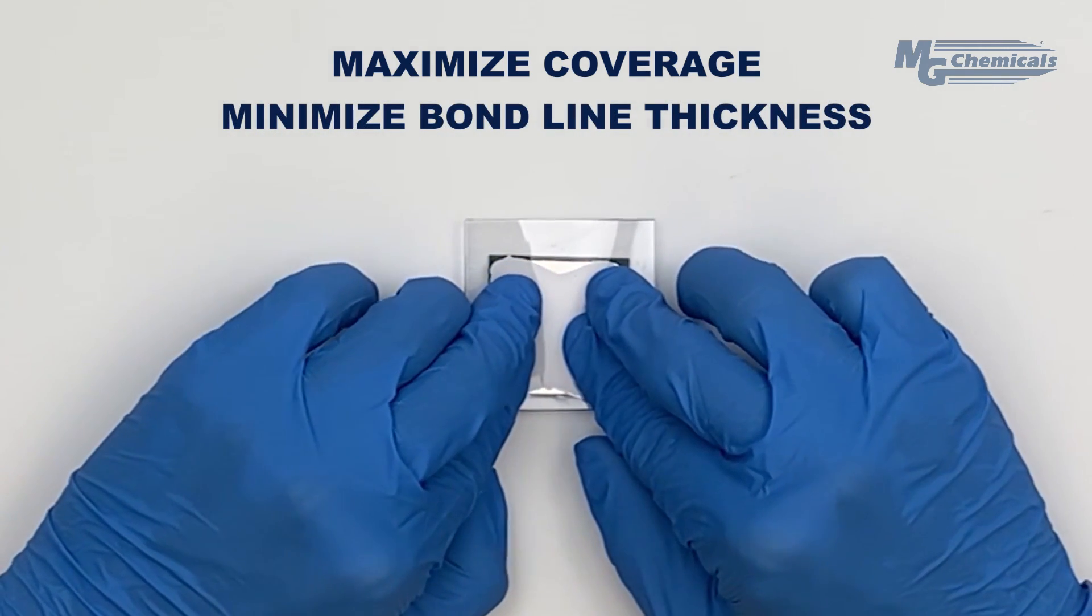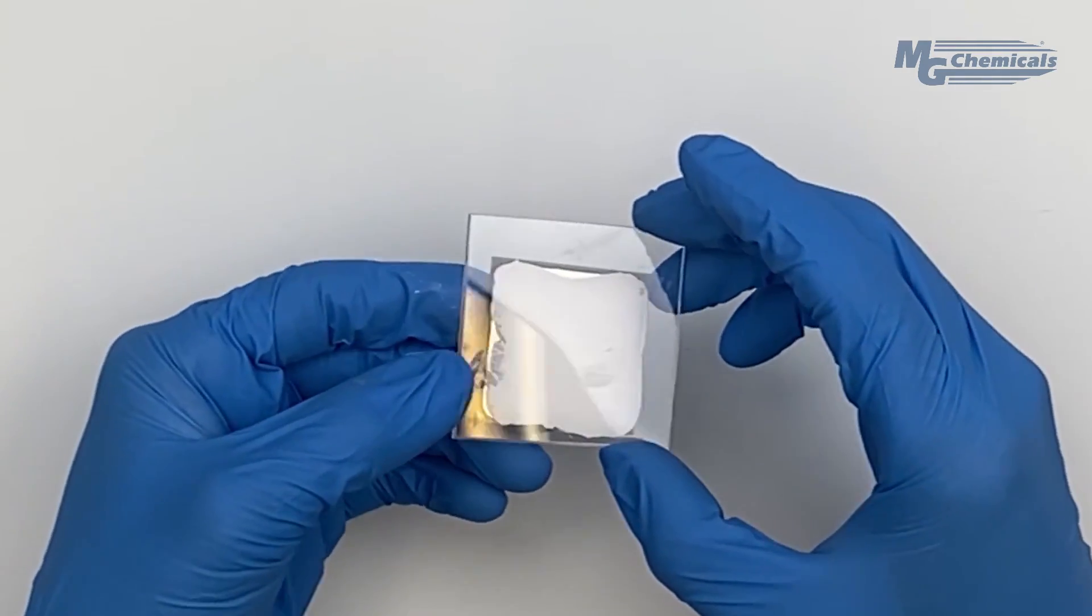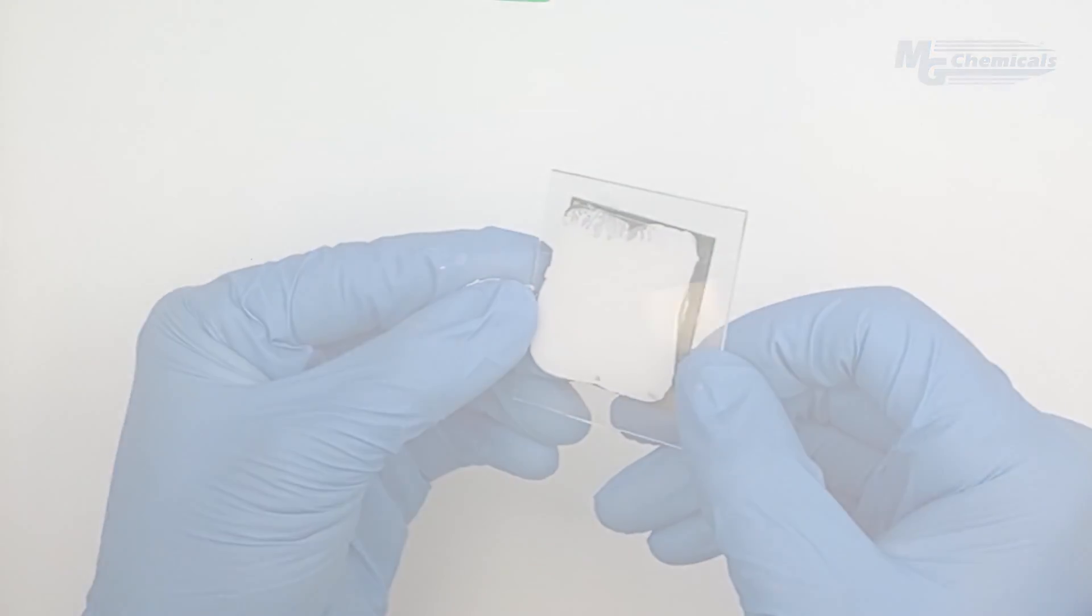Once the new paste is applied thinly and evenly, press the heat sink firmly onto the CPU, which will spread the paste across the surface and ensure maximum coverage and minimum thickness.